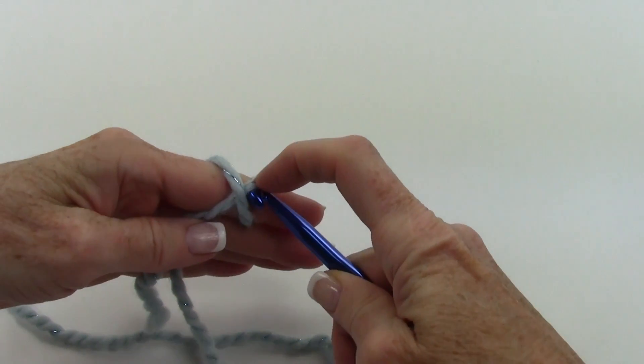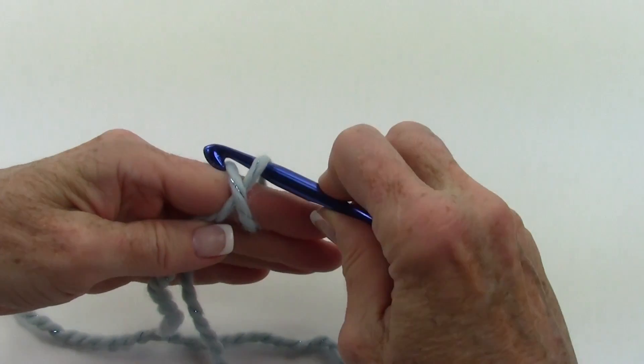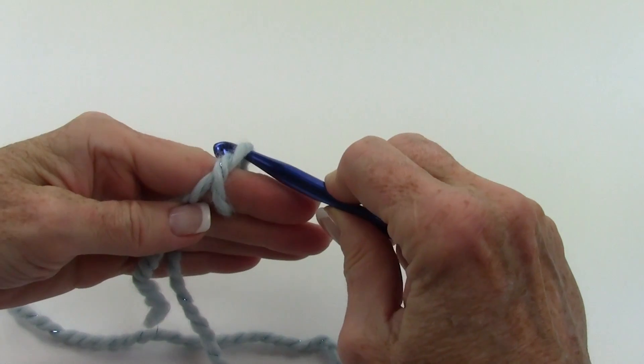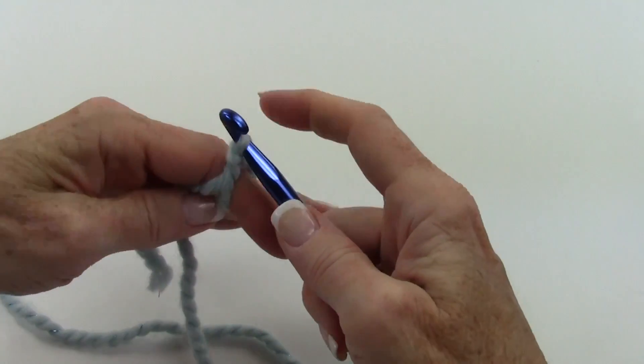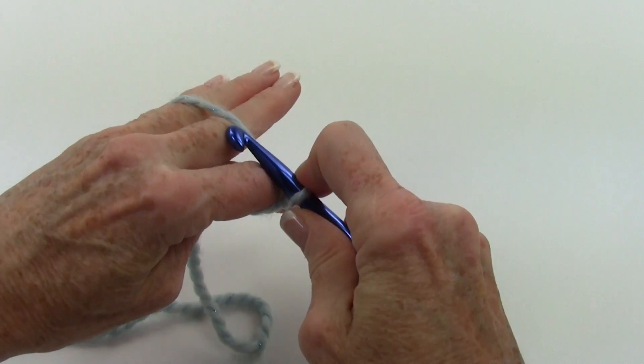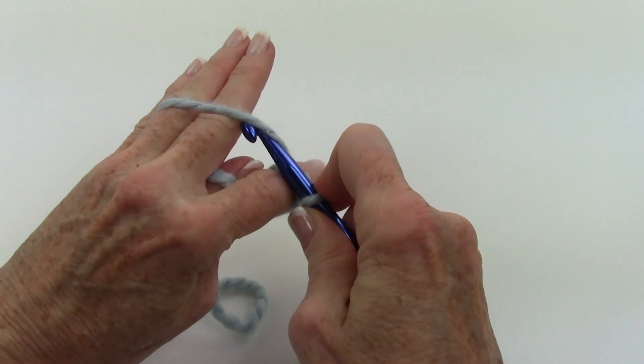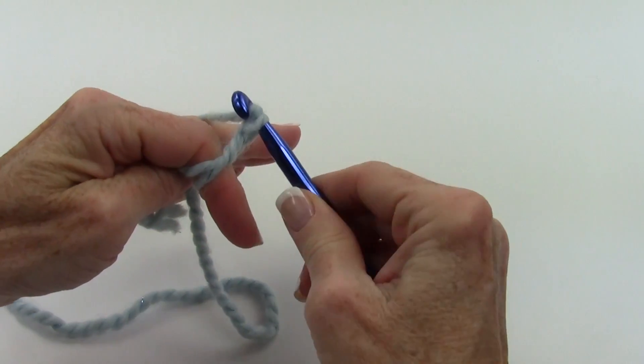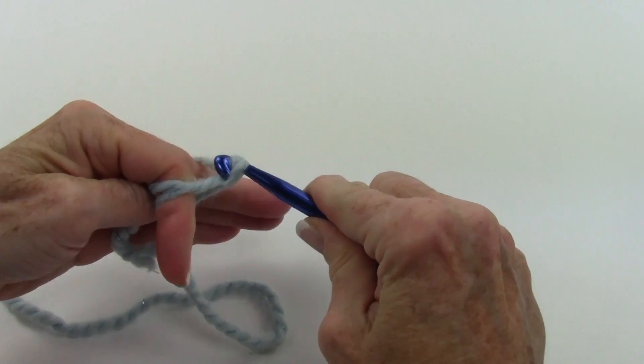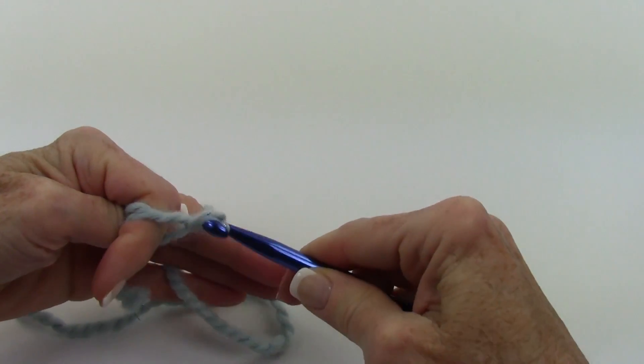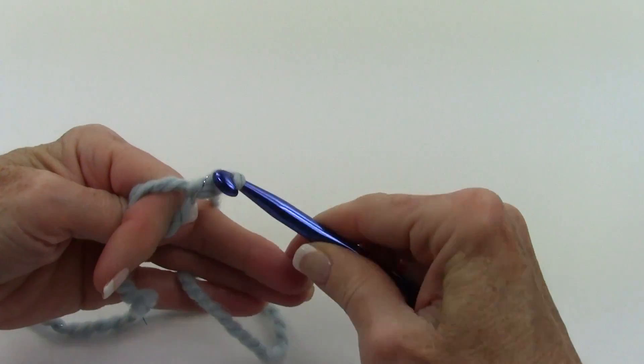I'm going to go under the first strand here, and I'm going to pull this strand through that strand right there, then I'm going to turn my hand back like this, and I'm going to chain one with the strand in the back.